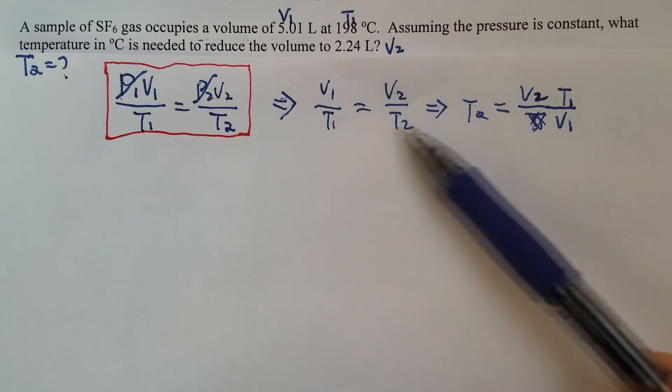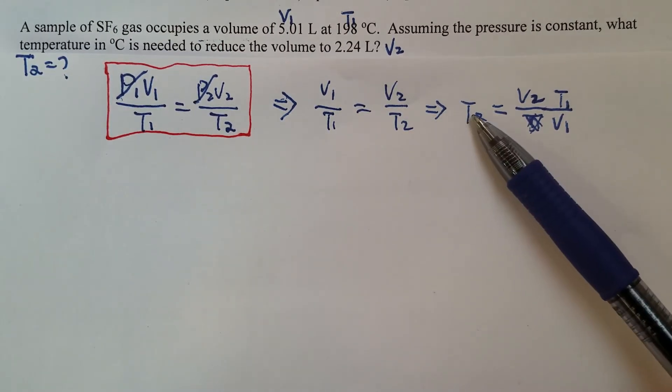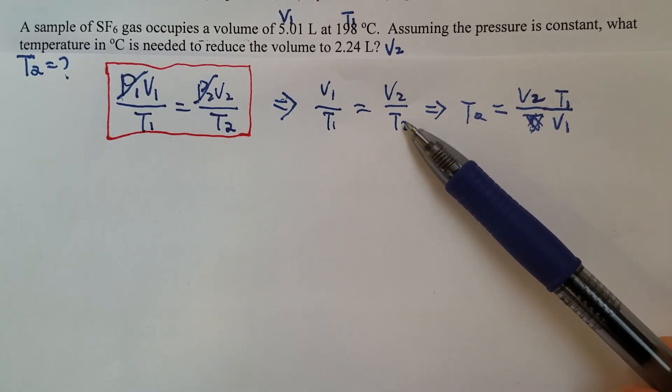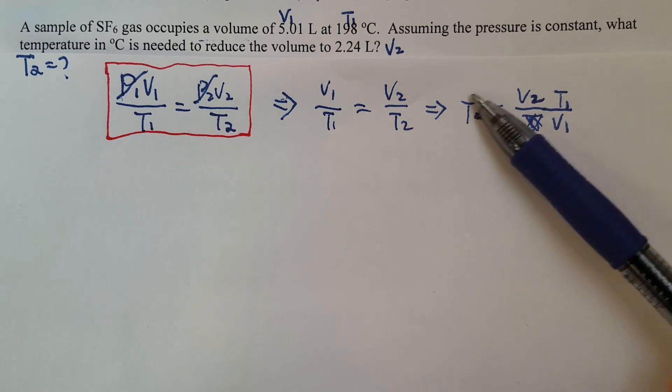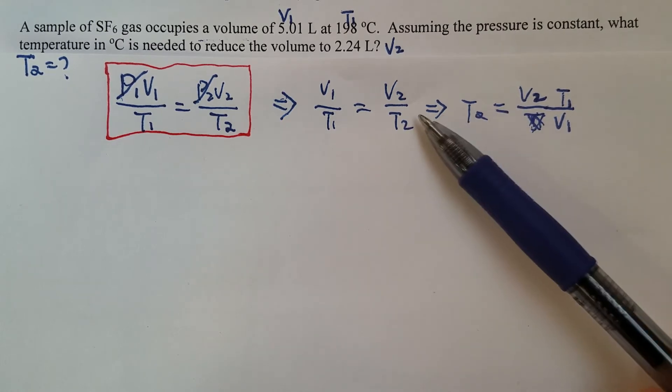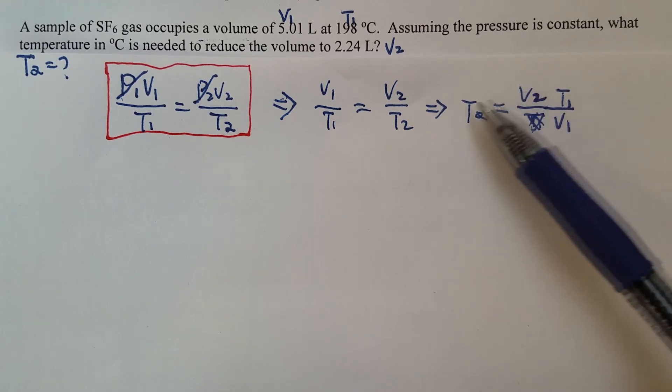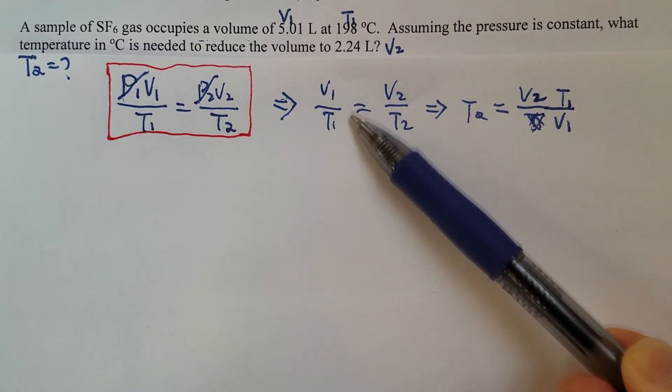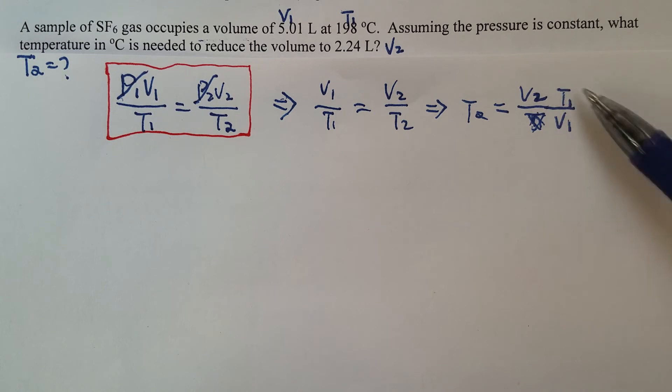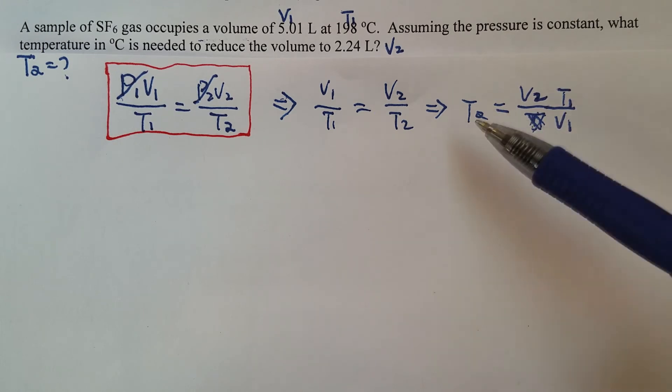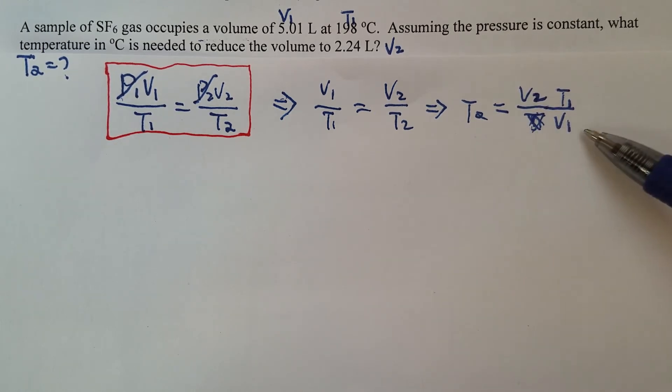So from this Charles law equation, we can calculate T2. So we move T2 to the other side, then leave V2 on the right hand side. And then the V1, T1, we just flip them. We can now use this equation to solve this problem.